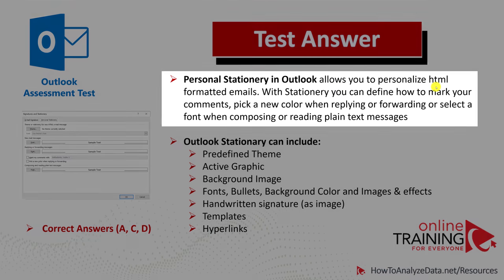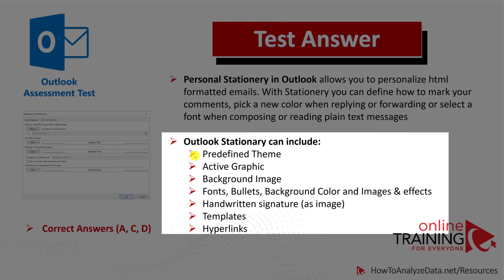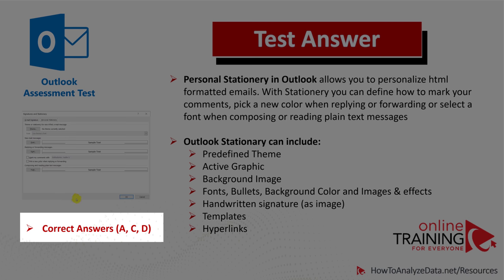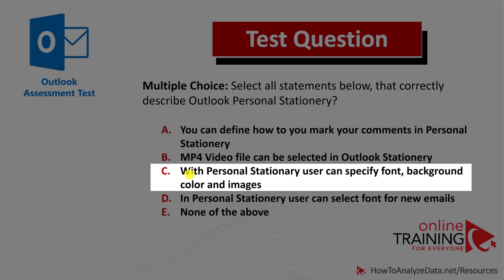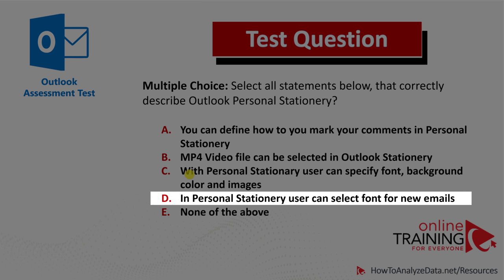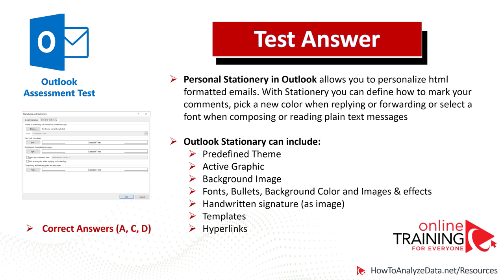Outlook stationery allows you to personalize HTML-formatted emails. With stationery, you can define how to mark your comments, pick a new color when replying or forwarding, or select a font when composing or reading plain text messages. Stationery can include predefined themes, active graphics, background images, fonts, bullets, background colors, image effects, handwritten signature as image, templates, and hyperlinks. Choices A, C, and D correctly describe Outlook stationery. Choice A — defining how to mark comments — is correct. Choice C — specifying font, background color, and images — is correct. Choice D — selecting fonts for new emails — is also correct.